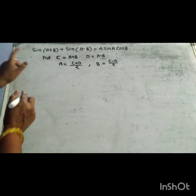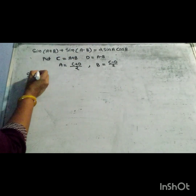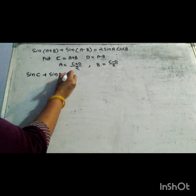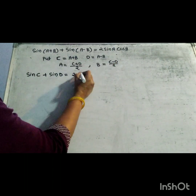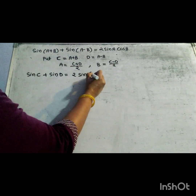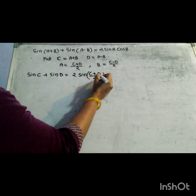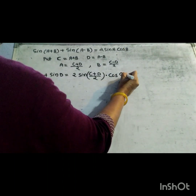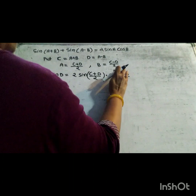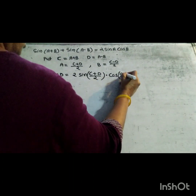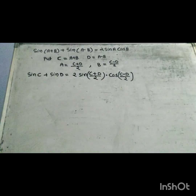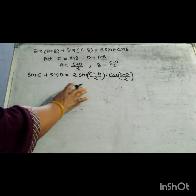sin A plus B means sin C, sin A minus B means sin D. sin C plus sin D equal to 2 sin A, where A is C plus D upon 2 — so 2 sin C plus D upon 2 into cos C minus D upon 2. This equals the RHS of the equation, and it is what we had to prove.